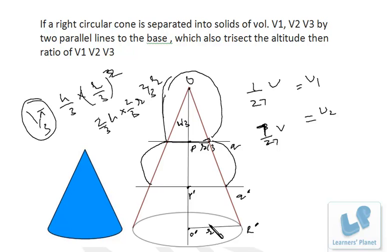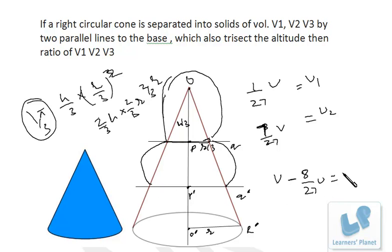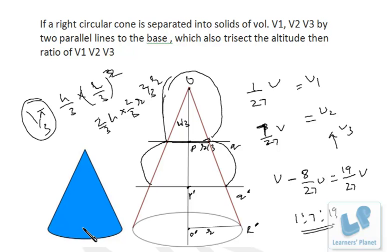For V3, we take the total volume V and subtract the volume of the medium cone (8V/27): V3 = V − 8V/27 = 19V/27. Therefore V1:V2:V3 = 1:7:19. This is straightforward once you are clear that the three triangles are similar so height and radius are proportional.